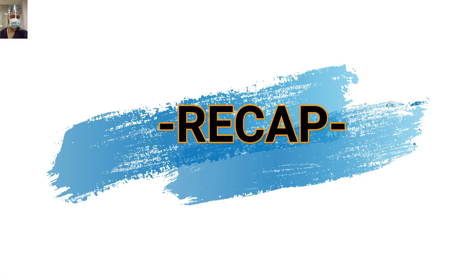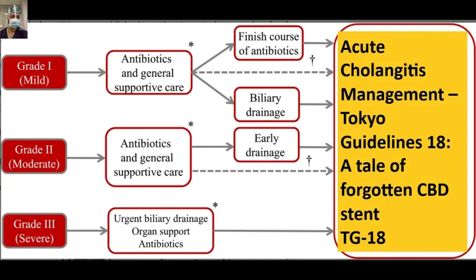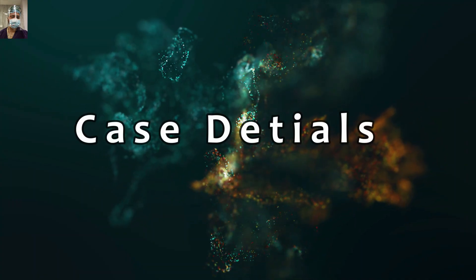As a prequel to this video, it is highly desirable that you watch our previous video on acute cholangitis management. That was a case of a forgotten CBD stent in which we discussed in detail the management of acute cholangitis — types, grading, and diagnosis — so that you understand the theoretical discussion in this case scenario better, as we will not be covering those details again. The link is available in the description and in the i-cards of this video.